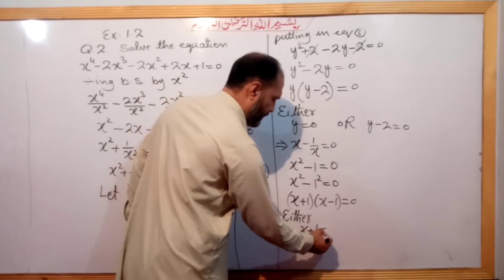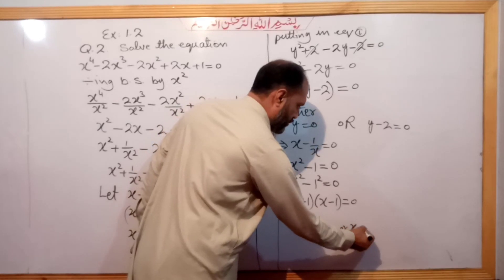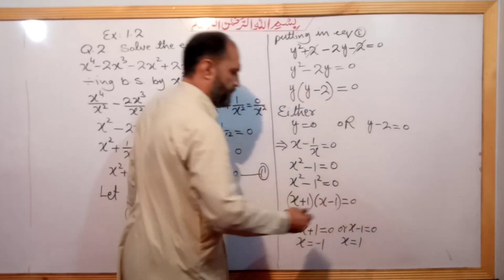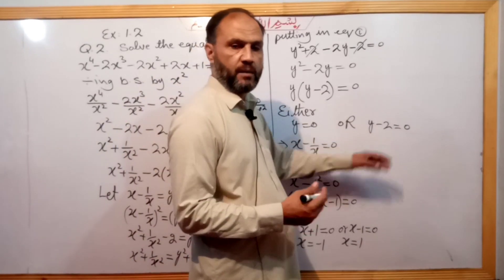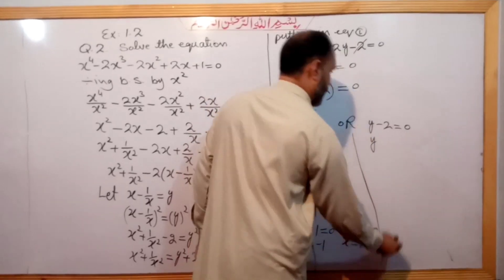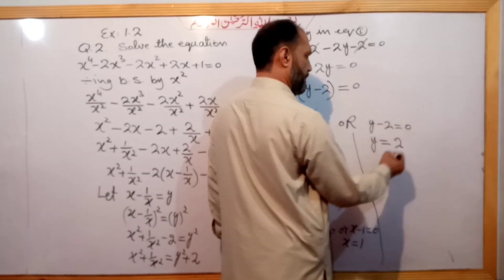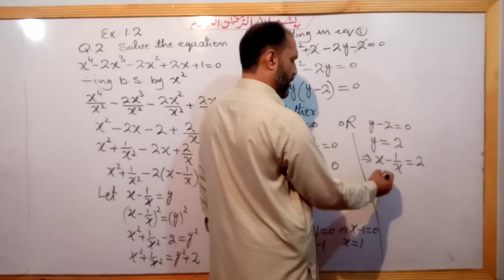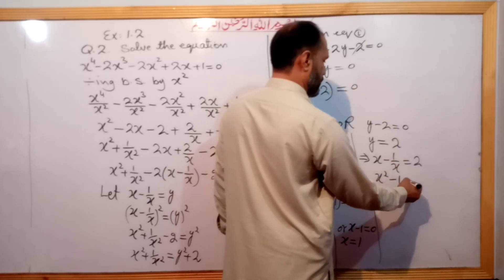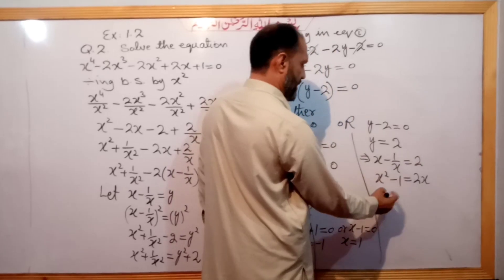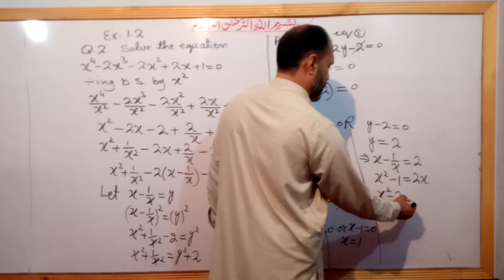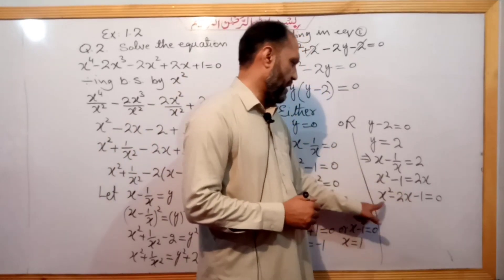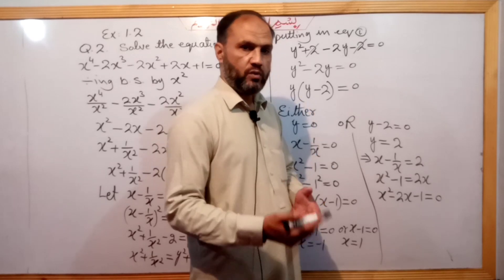From Case 1: x plus 1 equals 0 gives x equals negative 1, and x minus 1 equals 0 gives x equals 1. For the second case, y equals 2 implies x minus 1/x equals 2. Multiplying by x: x² minus 2x minus 1 equals 0. We now apply the quadratic formula to solve this.